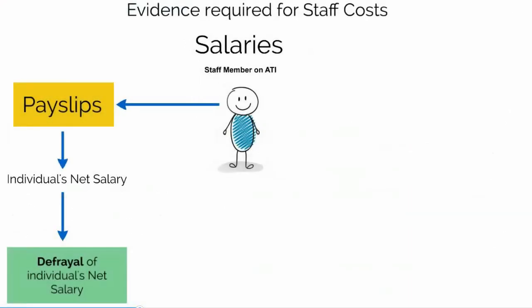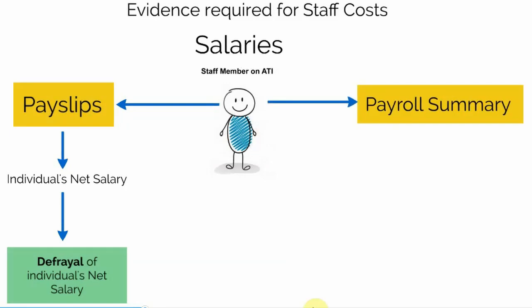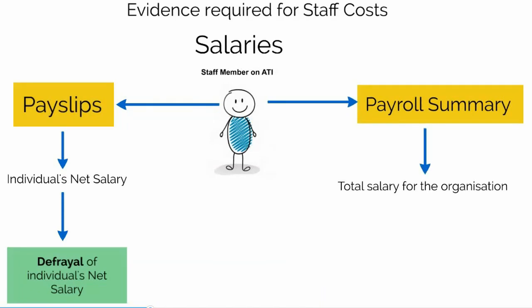Most organisations don't pay their staff members directly. Instead they have a payroll system whereby employee salaries are aggregated into one bank payment. The evidence required in this case would be the payroll summary, which lists the individuals included within the aggregate, and the bank statement showing the defrayal of the total salaries paid.